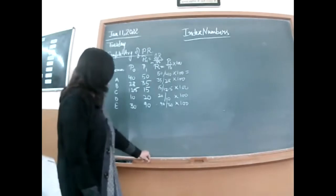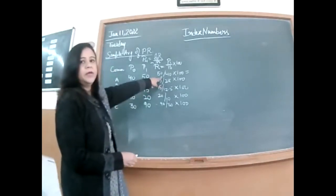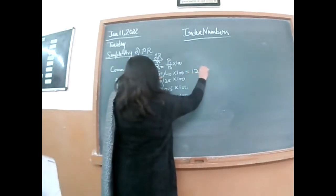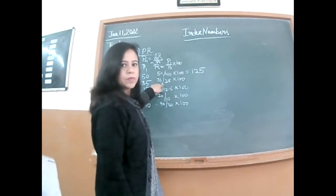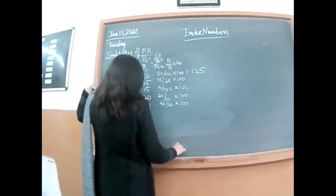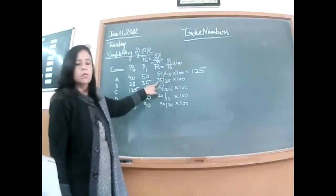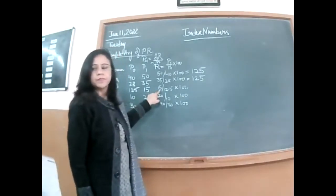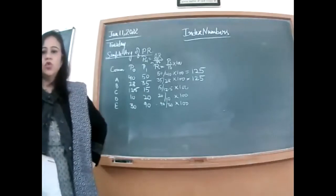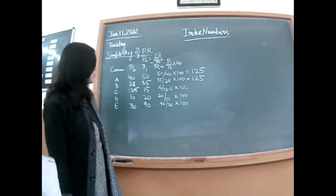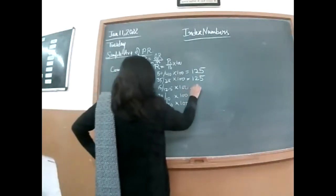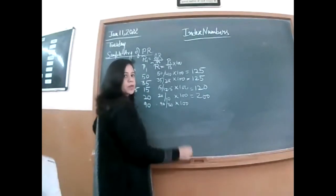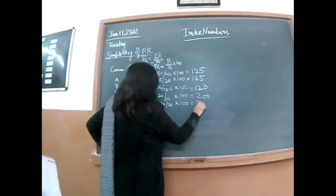Those who have calculated, give me the answer. 50 over 14 — 200. Yes, 125. Okay, 125. What is it? 120. Add them — 25. Okay. What is 15 over 12.5 into 100? 120. It's double, obviously — 200. It's three times, so obviously 300.